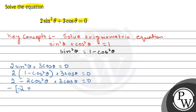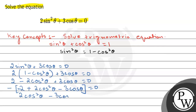Expanding: 2 minus 2 cos squared theta plus 3 cos theta equals 0. Rearranging, we get 2 cos squared theta minus 3 cos theta minus 2 equals 0. Now we will do middle term splitting.